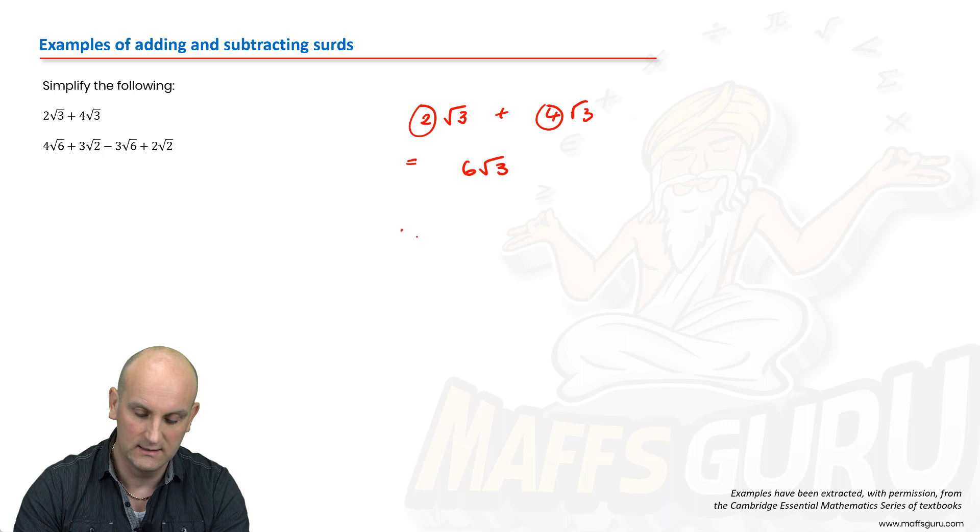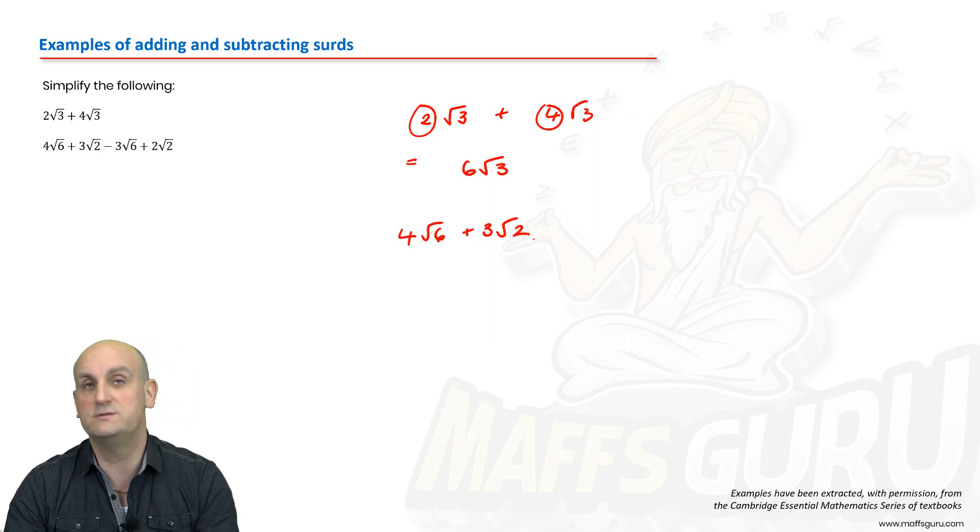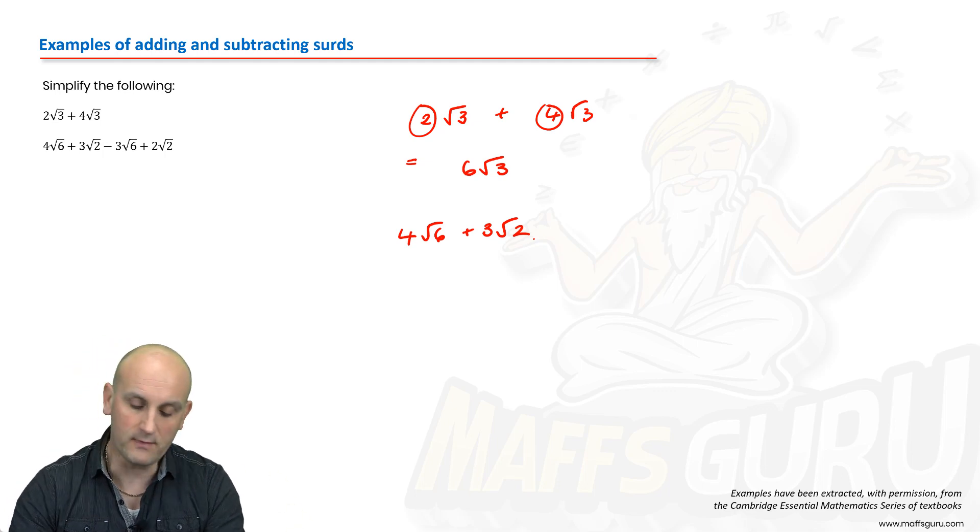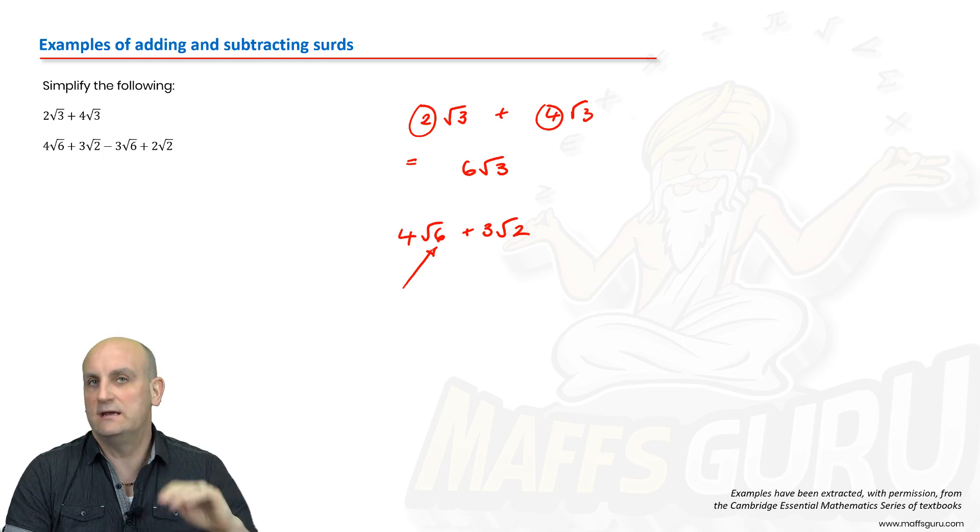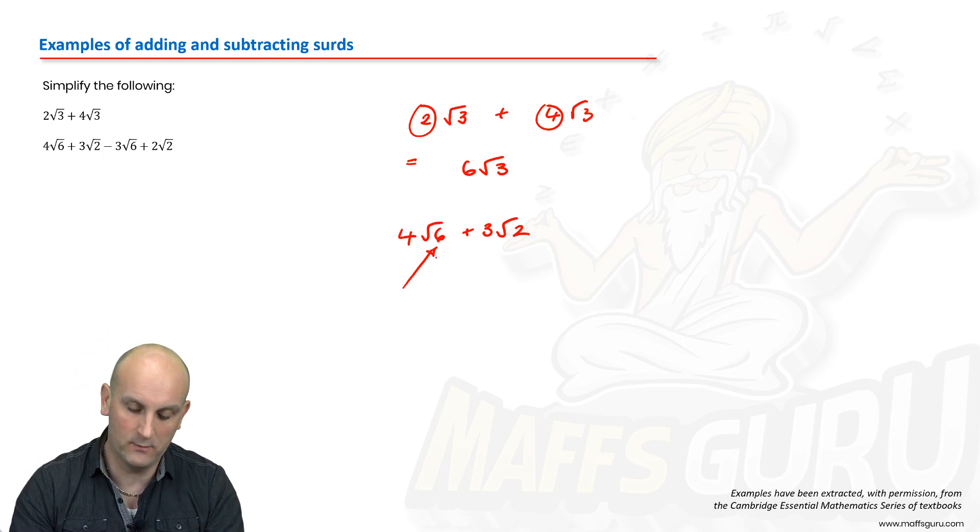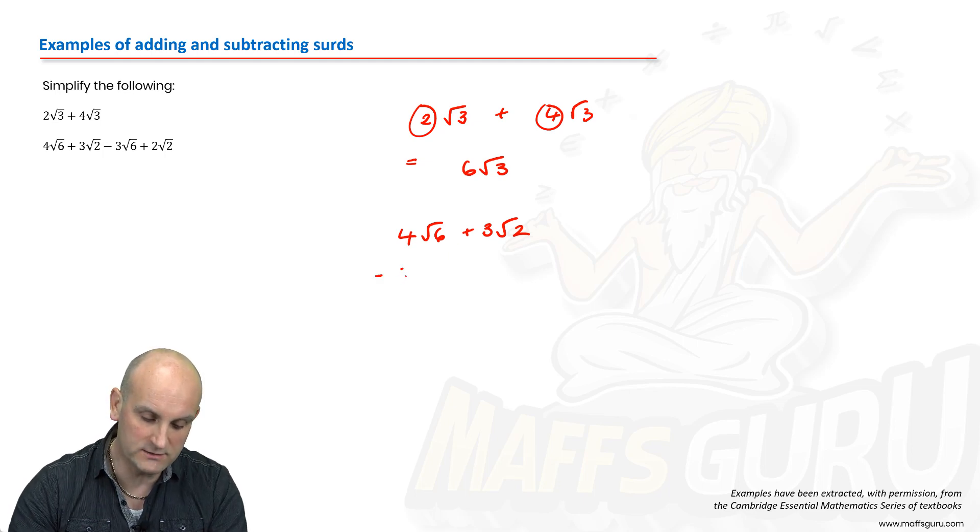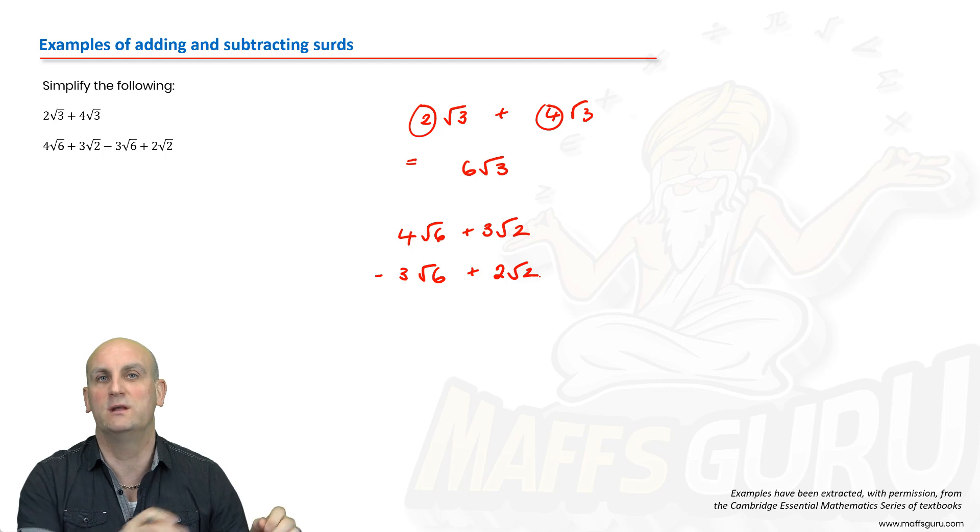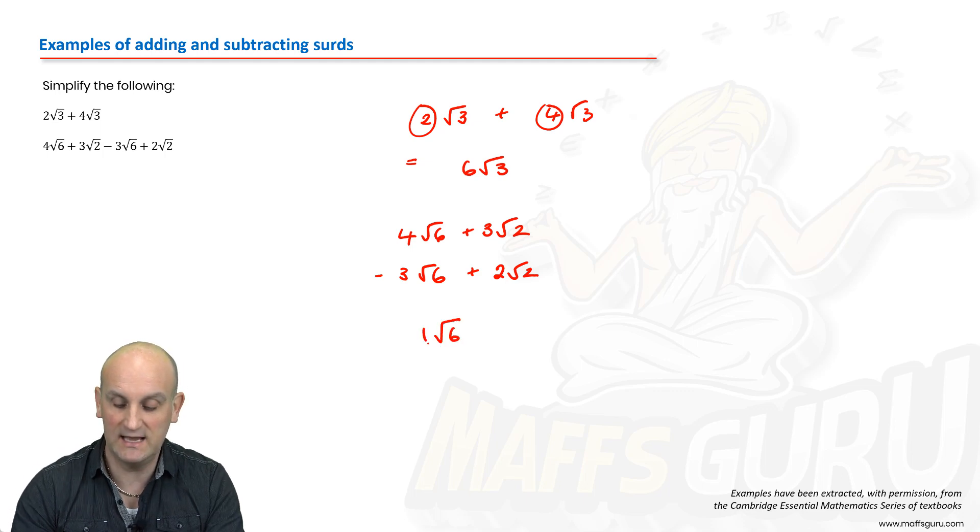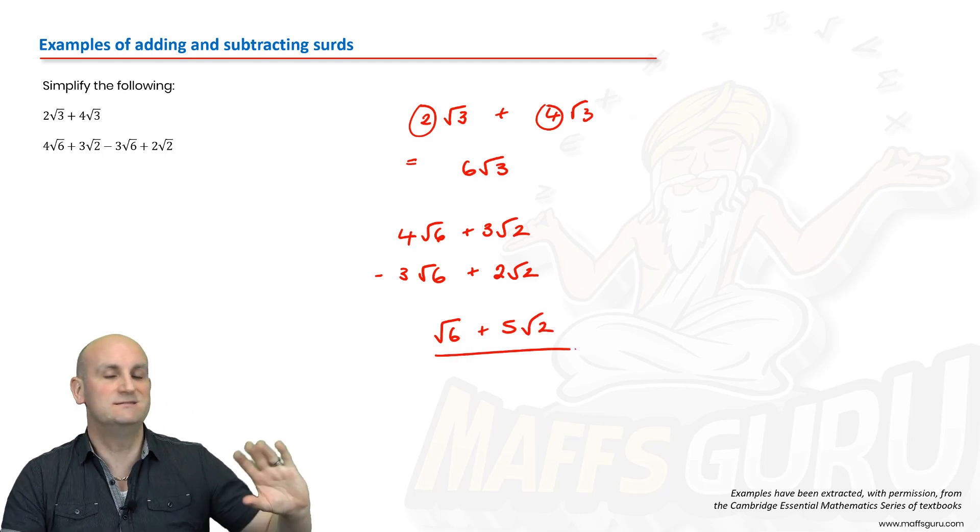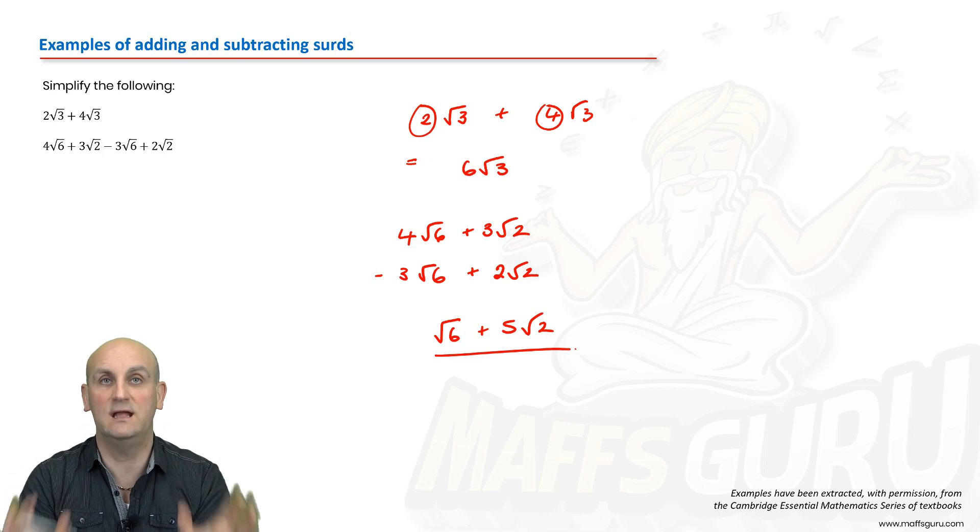What about the next one? We've got 4 root 6 plus 3 root 2. Automatically, I'm noticing that the root 6 and the root 3 are different. The next thing to check, because math is a big fat trick, is can I simplify that root 6? As it turns out, no, I can't. I've got minus 3 root 6 and another 2 root 2s. When I add or subtract those together, I've got to deal with the ones with the like surds. So I've got 4 root 6s minus 3 root 6s, which is just going to give me root 6. I've got 3 root 2s, add another 2 root 2s, gives me positive 5 root 2s. And there is nothing more complicated to it than that. Just add together the like surds.